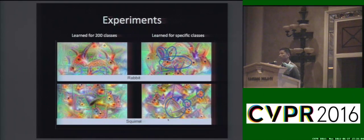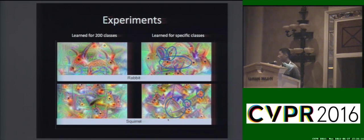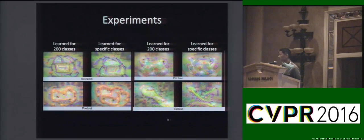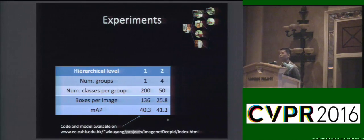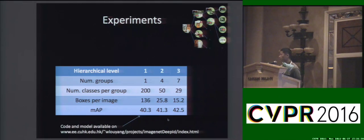Visualization of the deeply learned features also shows that on the right-hand side, if we learn features specifically for groups of classes, we can have better feature representation — for example, focusing on the rabbit's ears, and for the squirrel, on its tail. Here are more examples. Quantitative results on ImageNet and Pascal also show that dividing object classes into groups for learning deep features improves accuracy in terms of mean AP, especially when going further with the hierarchical structure.